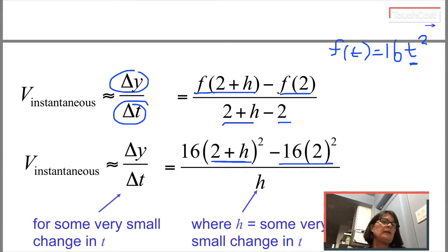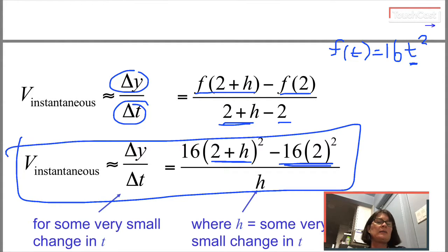So this part here is f of 2, the position of the rock two seconds after it starts falling. And this h comes from 2 plus h minus 2. So I'm going to start at the top of the next slide with this expression.